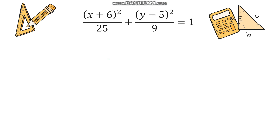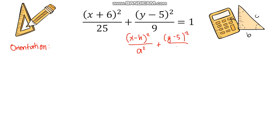Let's solve for the parts of the ellipse given the equation: (x + 6)² / 25 + (y − 5)² / 9 = 1. First we identify the orientation. The larger denominator is 25 and it is with x, so it follows the form (x − h)² / a² + (y − k)² / b² = 1, meaning this is a horizontal ellipse.